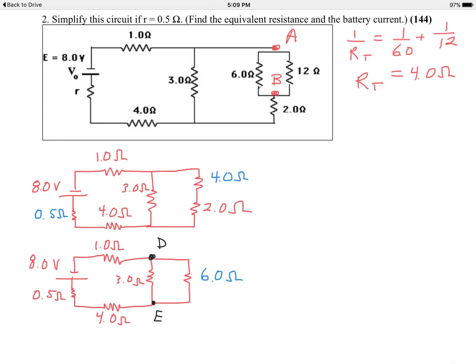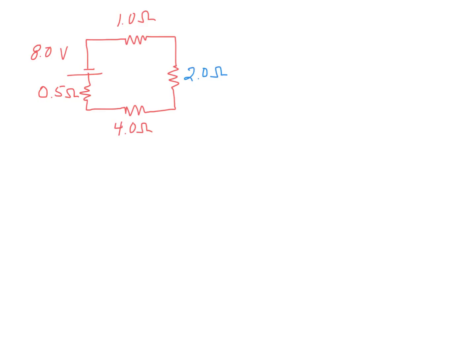I'll do the math up here to the right. So that'd be 1 over the combined, our total will be equal to 1 over 3.0 plus 1 over 6.0. So if you do the math there, the total combined resistance is 2.0 ohms. So we'll draw a new diagram. I'll do that on the next page.